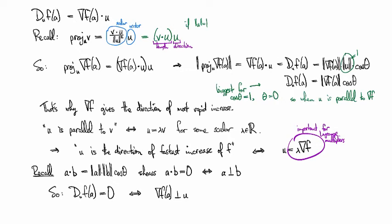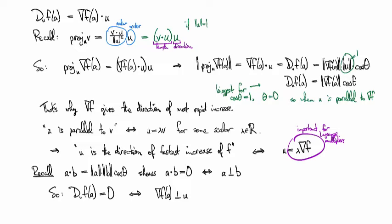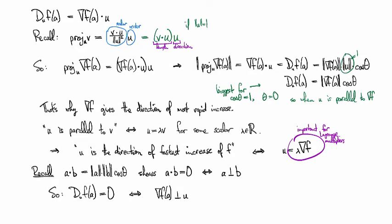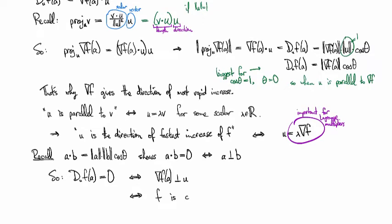So, the directional derivative of f at a being equal to 0 means exactly that the gradient of f at this location is orthogonal to u. So, in other words, you're moving in a direction orthogonal to the gradient if you don't want the function value to change.